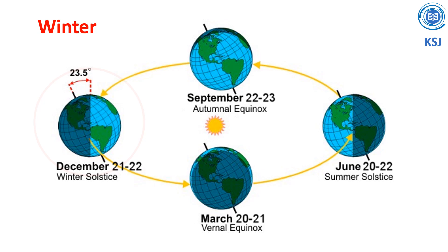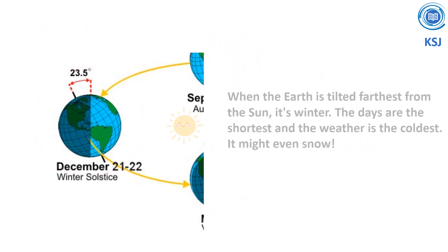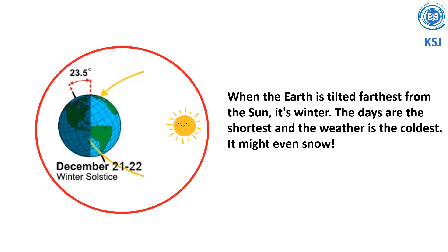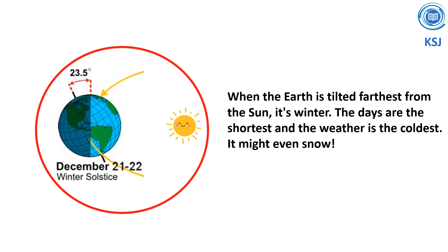Winter: when the earth is tilted farthest from the sun, it's winter. The days are the shortest and the weather is the coldest. It might even snow.